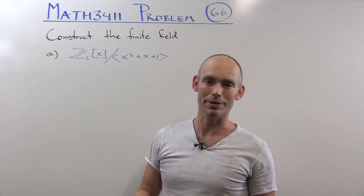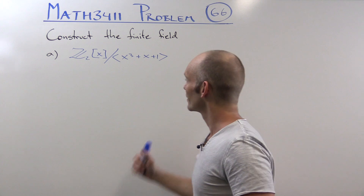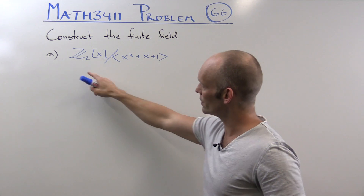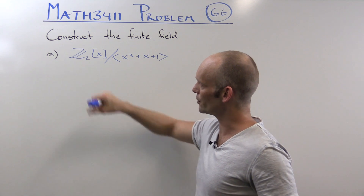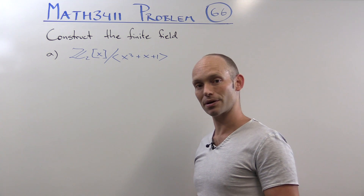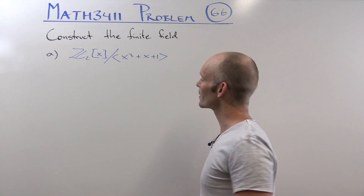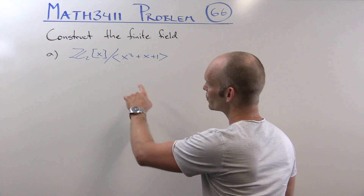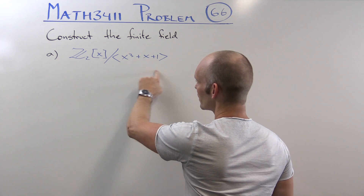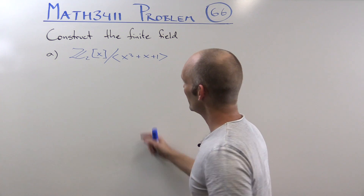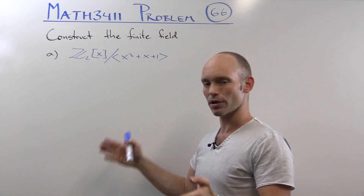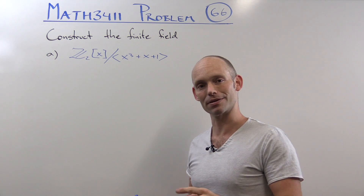I'll leave parts B and C to you. So we have some polynomials. They are binary polynomials — the coefficients of the polynomials are binary. We're looking at these modulus this polynomial here, and that gives you a set of polynomials which then forms a field.